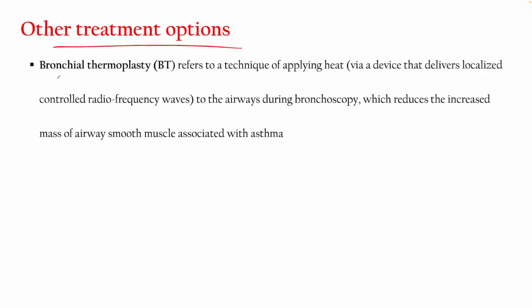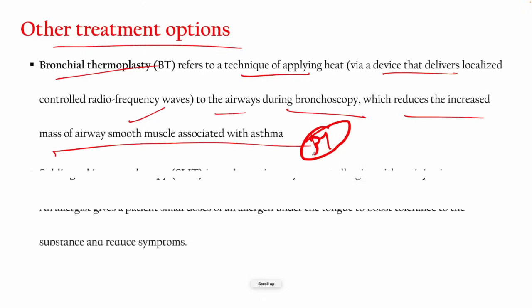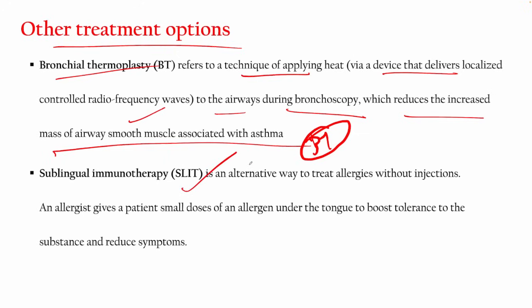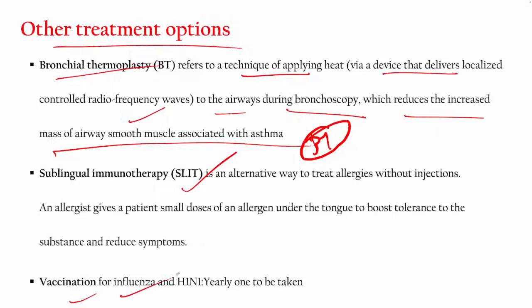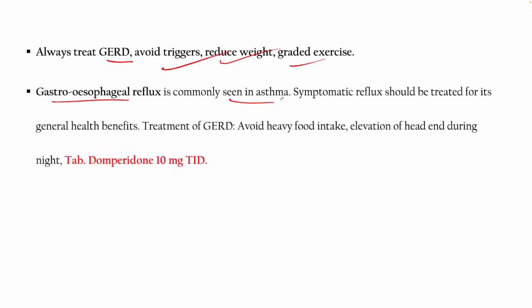Other treatment options include bronchial thermoplasty — a technique of applying heat via radiofrequency waves through the airway via bronchoscopy, which reduces the increased mass of smooth muscle associated with asthma. SLIT (sublingual immunotherapy) is an injection-free option. Vaccination against influenza and H1N1 is recommended. GERD can also act as a gastroesophageal trigger in asthma — reduce weight and do graded exercise.